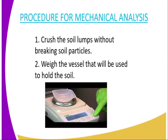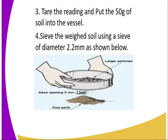Procedure number three: tare the reading and put 50 grams of soil into the vessel. You are supposed to use a spatula when adding the soil bit by bit into the vessel until the reading on the beam balance reads 50 grams.